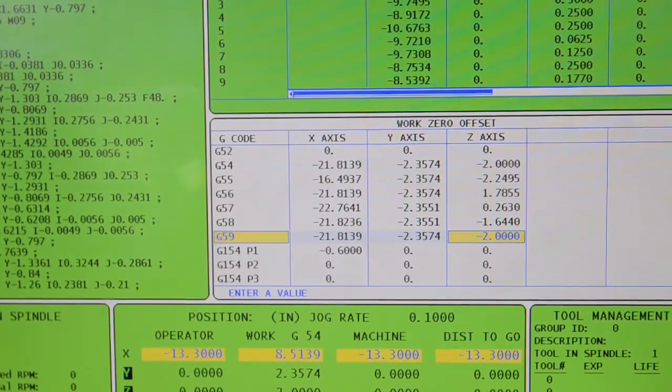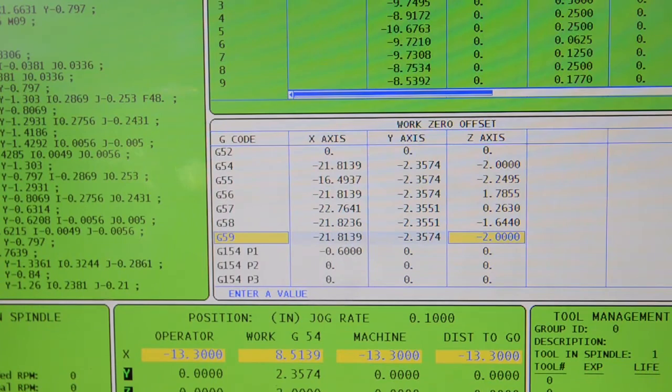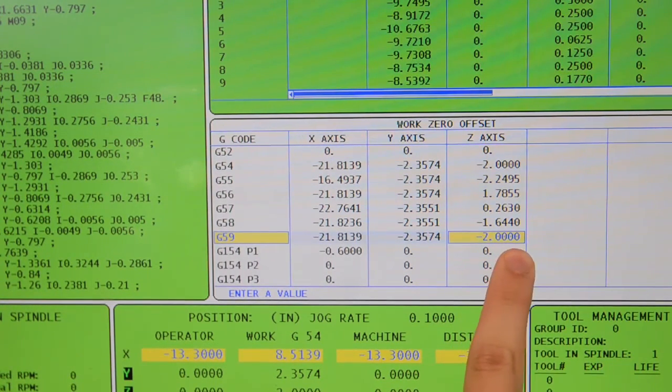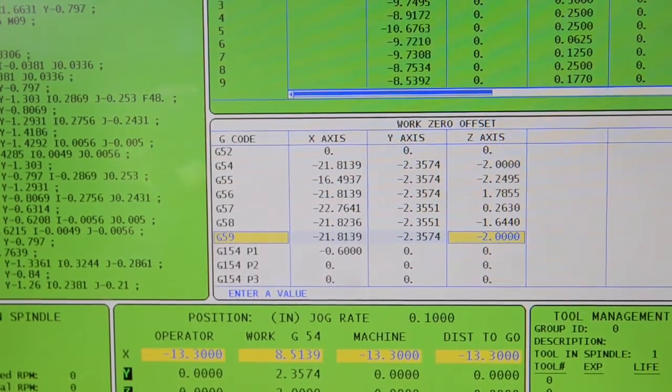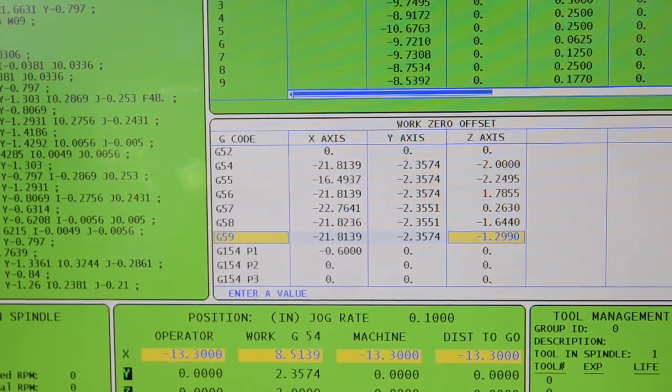Now to edit our z-axis work offset, we're going to highlight right here and add our 0.701, 0.701. And we're going to press the right slash enter button. Excellent.